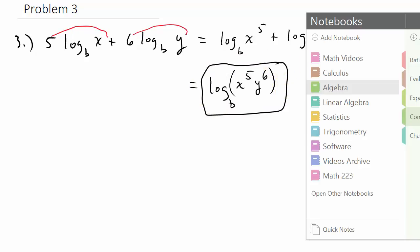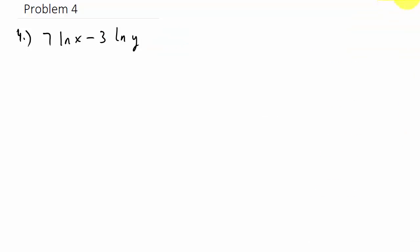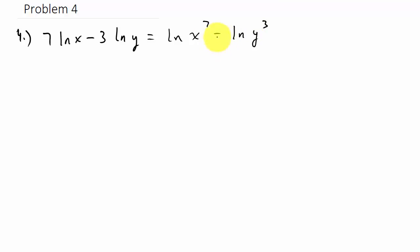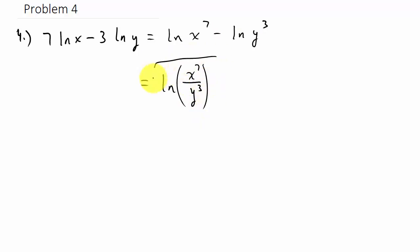Number 4: same thing here. We're going to take the numbers in front and throw them back into the exponent. So that's natural log x to the 7th minus natural log y cubed. This is split up with subtraction, so that comes together as division — natural log of x to the 7th over y cubed, since y cubed is after the minus sign and goes to the denominator.